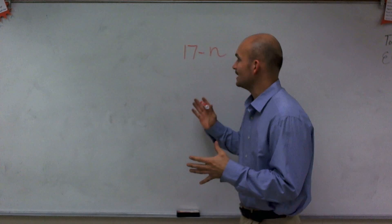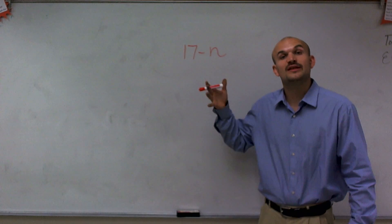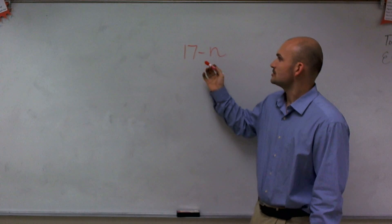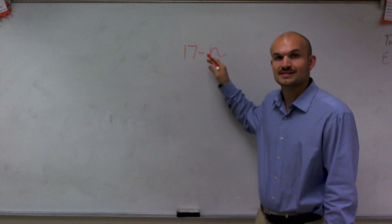So what we need to do is look at exactly what operation we're using and what possible ways we can use to describe that. So I have 17 minus a number.